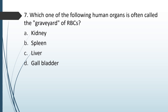Graveyard of RBCs — a very common question. The correct answer is option B, spleen. Why is it called the graveyard? Because the spleen has micro-capillaries, very small vessels through which the RBC needs to squeeze and move out. If an RBC becomes old, its maneuverability — its flexibility — gets affected. So when the RBC is old, it cannot squeeze itself through the micro vessels of the spleen and hence it dies there. So spleen is the graveyard of the RBCs.